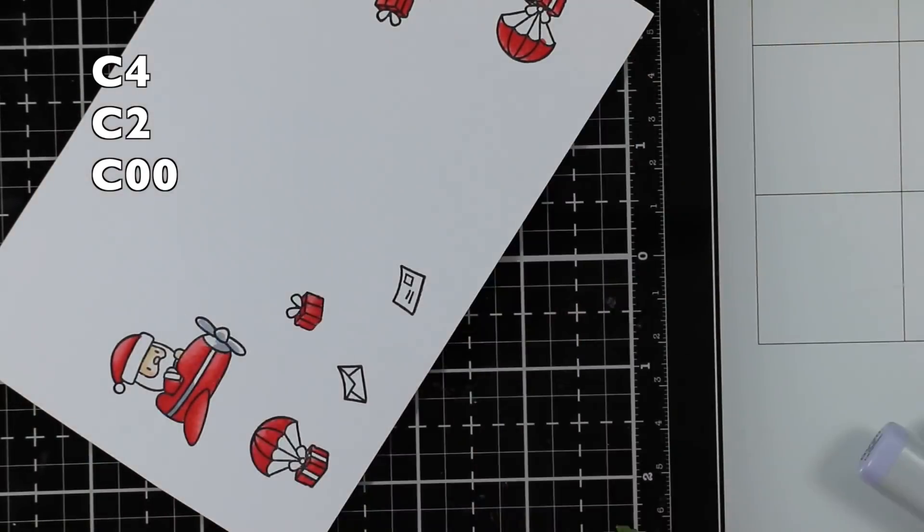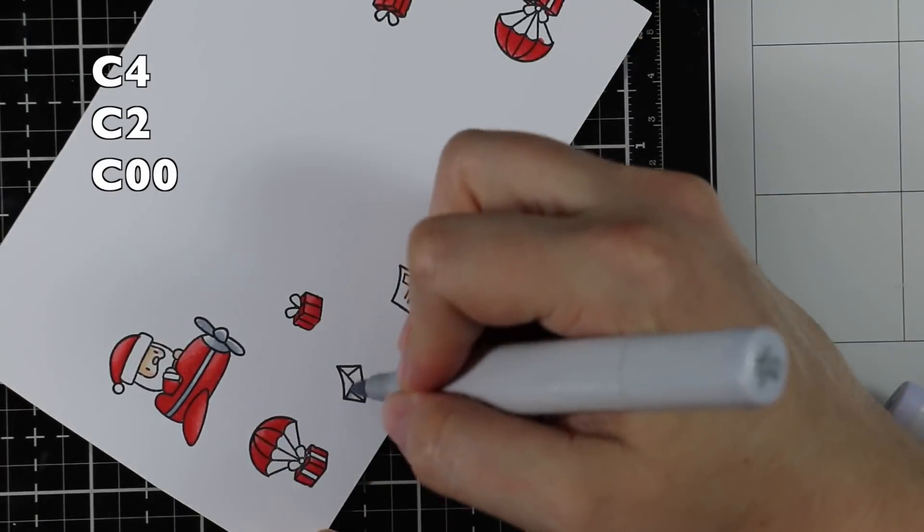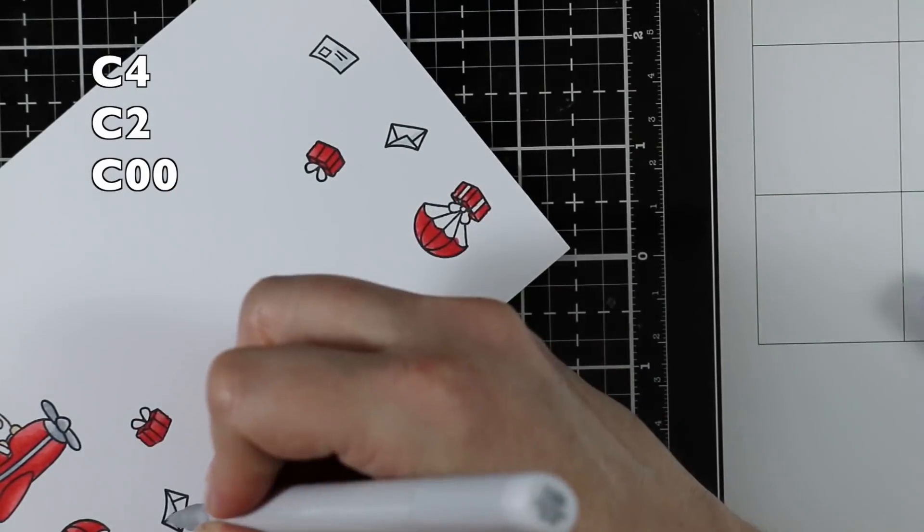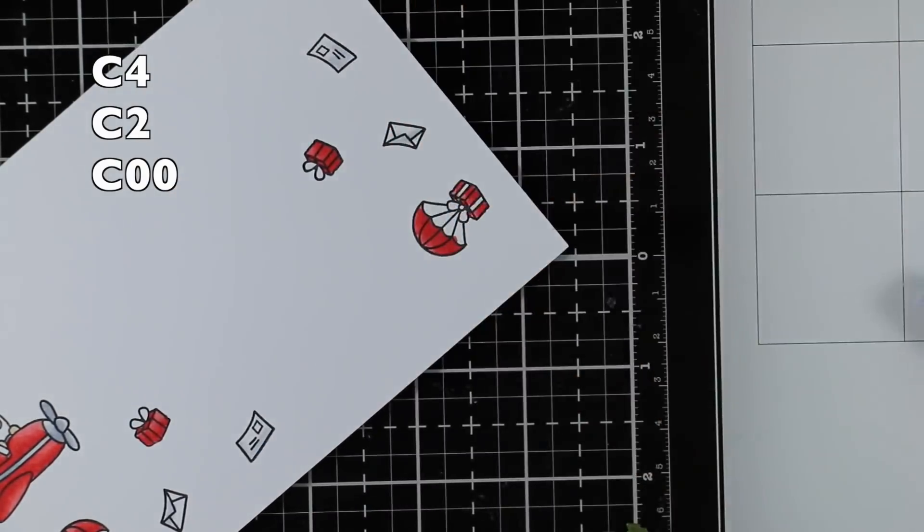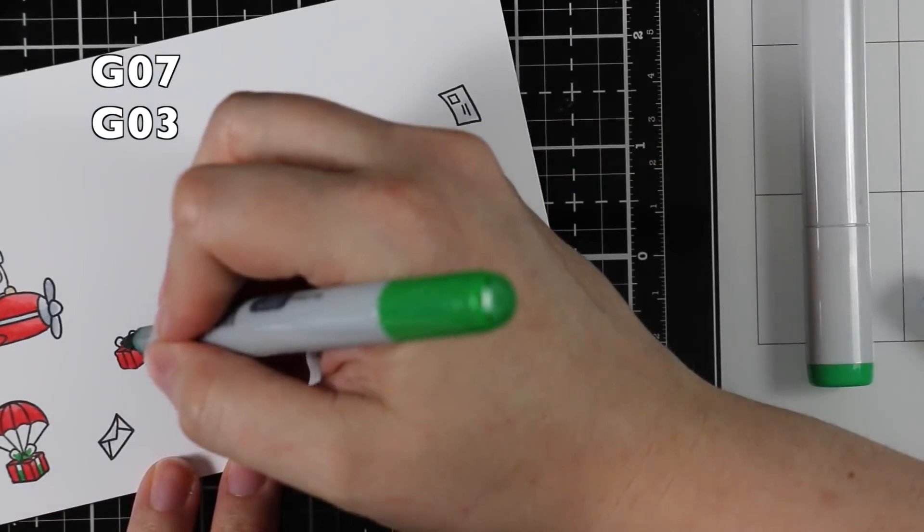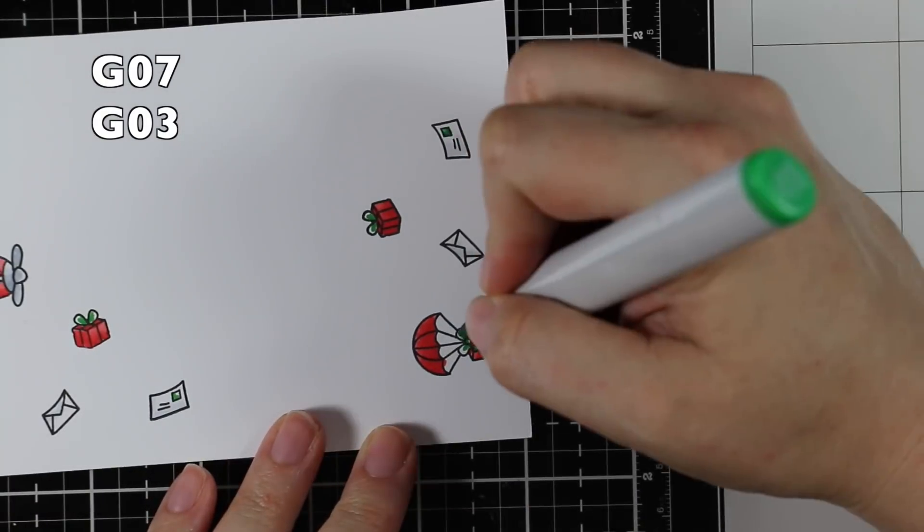I stamped the little Santa in his airplane which I just love, and then the little images I stamped twice so I had twice as many to play with. I colored everything in with the reds.